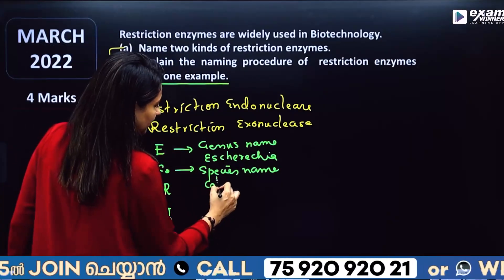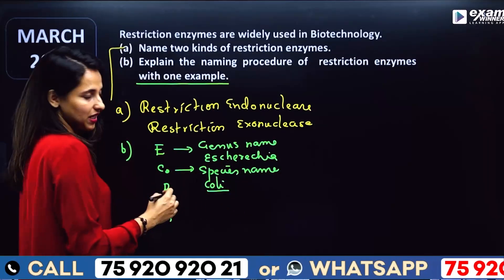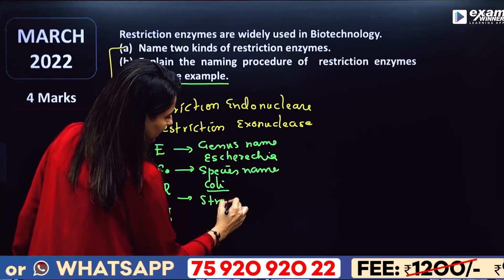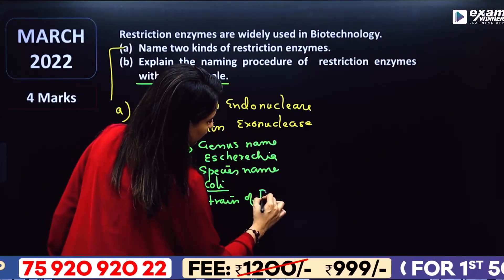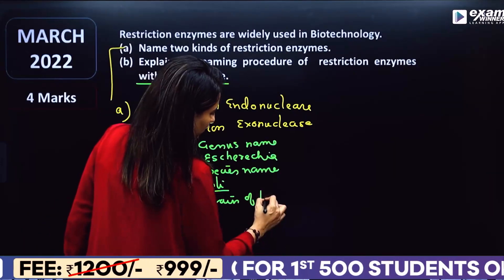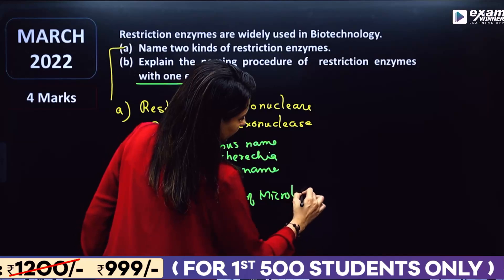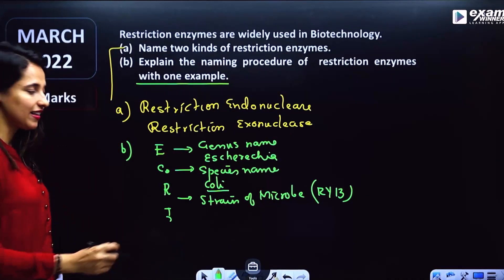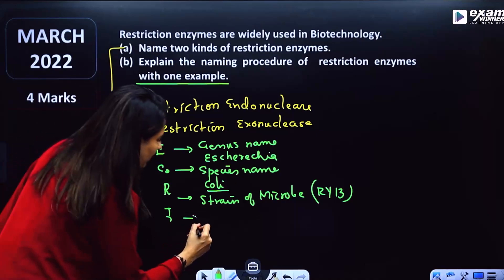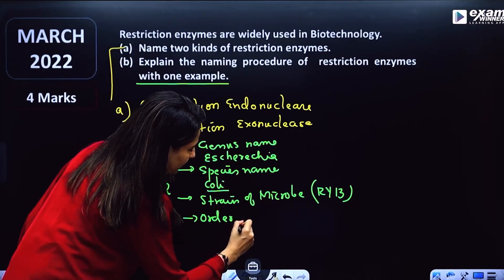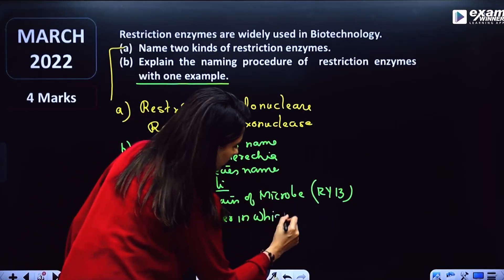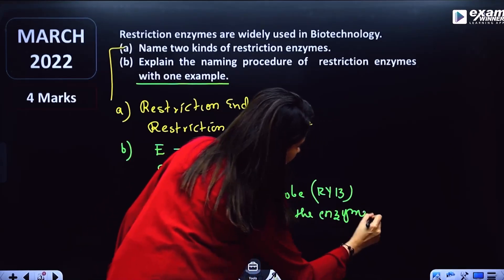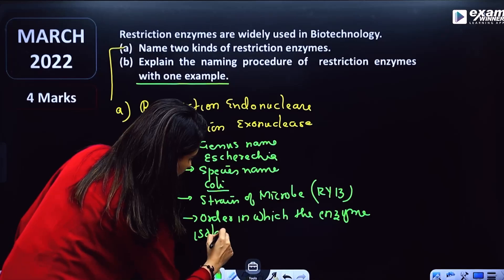For example, ECO R1. The first two letters come from the genus and species. Then R1 is the strain of bacteria — the strain of the microbe. R1 is the identifier, and then we add the order in which the enzyme was isolated from that strain.